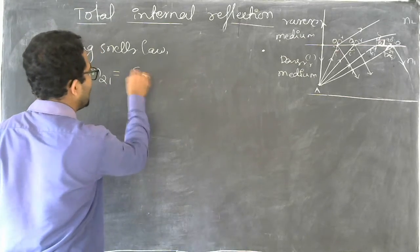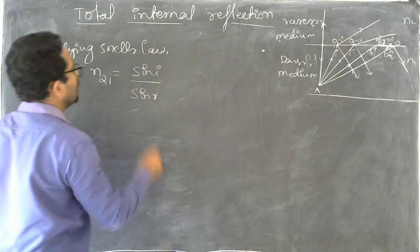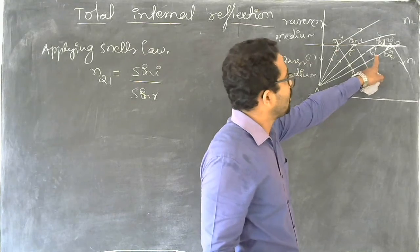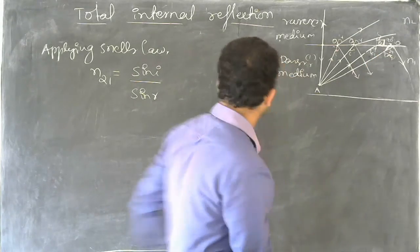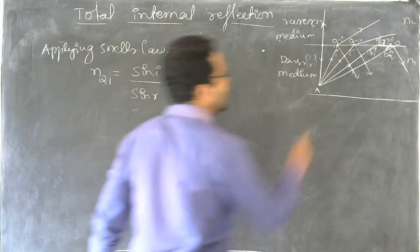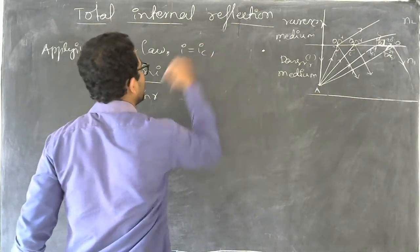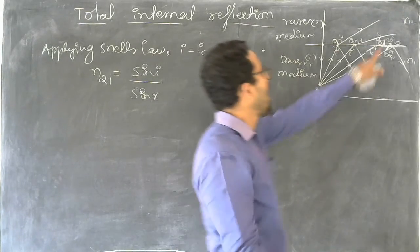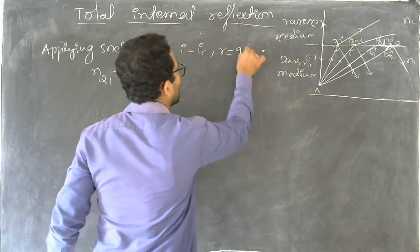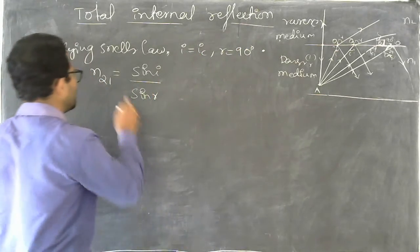Applying Snell's law to this, the angle of incidence is i. Let us take a ray which is incident at the critical angle, i equals ic. At that case, angle of refraction r is 90 degrees. So let us assume here n21 is equal to...